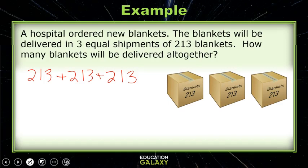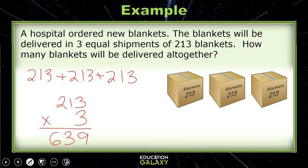I can use 213 times 3 to solve this problem. 3 times 3 is 9, then 3 times 1 is 3, and last, 3 times 2 is 6. So my answer is 639 blankets.